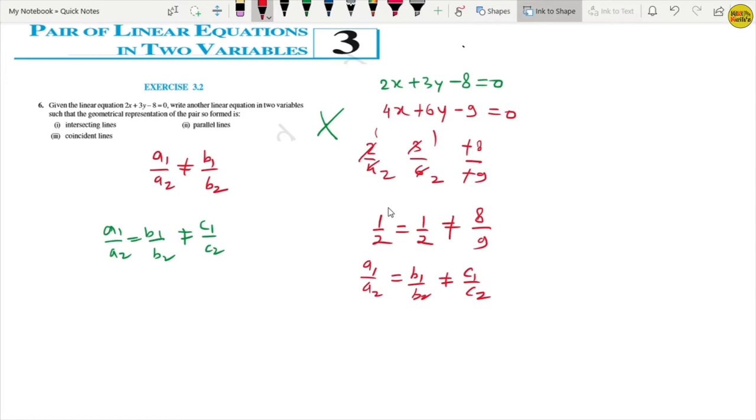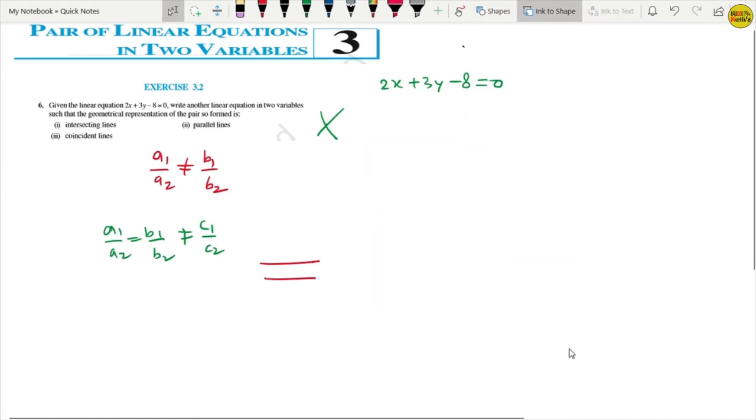That means this satisfied for the parallel line. Now we have the parallel line. Now what happens after this is that we have the coincident line. Now we know what happens in the coincident line.